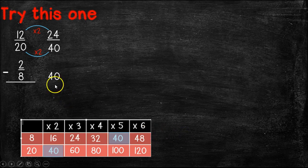Now we have to do it with our second fraction. 8 times what equals 40? 8 times 5. Good job. So now we have to do the same thing to the numerator. 2 times 5 equals 10.